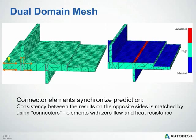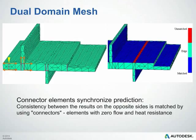Our dual domain mesh type is something proprietary to Autodesk Moldflow. Some also commonly refer to this as a 2.5D or 2.5-dimensional mesh. It's not a true 3D mesh in that we don't have elements and nodes through the thickness of the part for our calculations. However, we can still get profiled results and see what's going on through the thickness, offering a true 3D geometric representation of the part, as opposed to mid-plane, which is a single surface through the thickness. With dual domain, connector elements synchronize results from the top and bottom surfaces, and they have zero flow and heat resistance, so they're not affecting anything in that aspect.